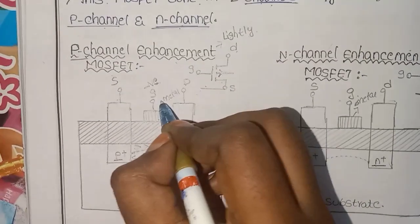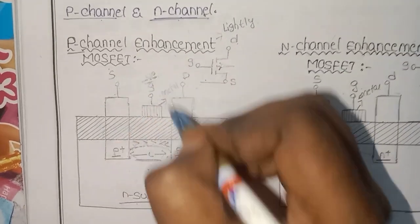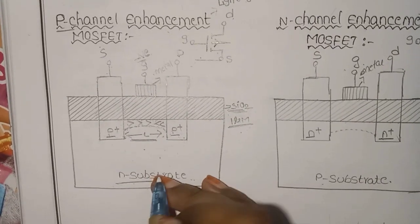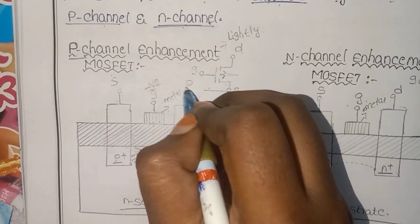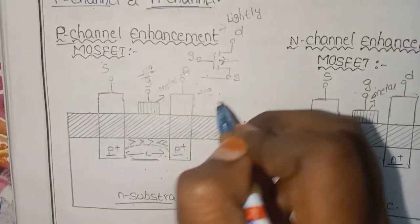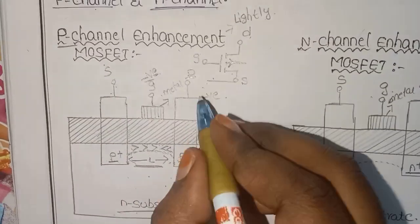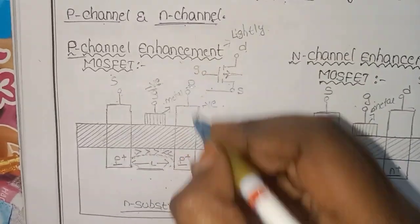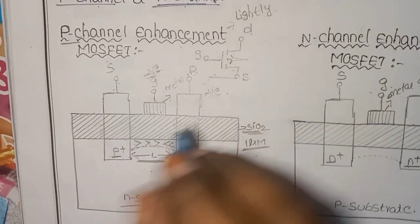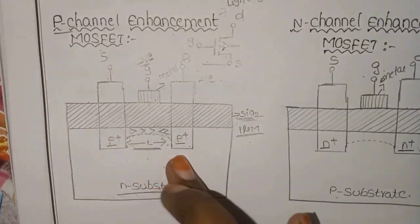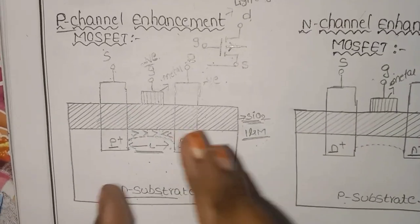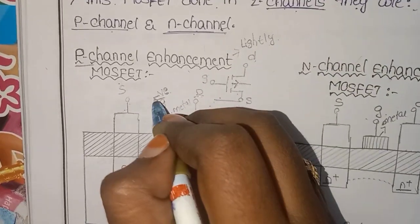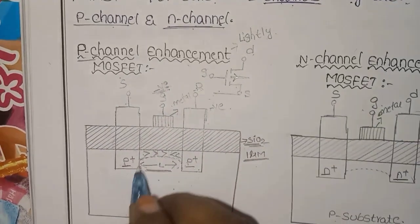When you apply the drain terminal, a negative voltage is applied to the drain terminal and the depletion region will decrease. The source-drain current flows when the gate terminal is applied to the appropriate phase.